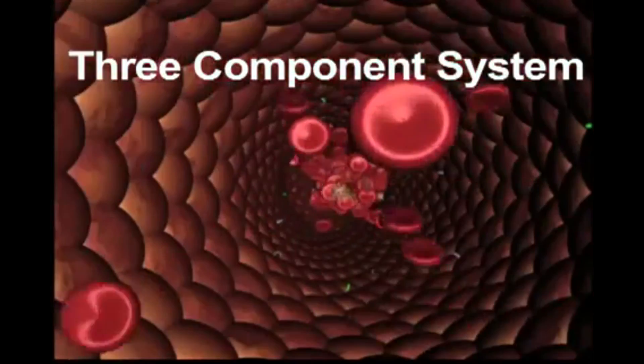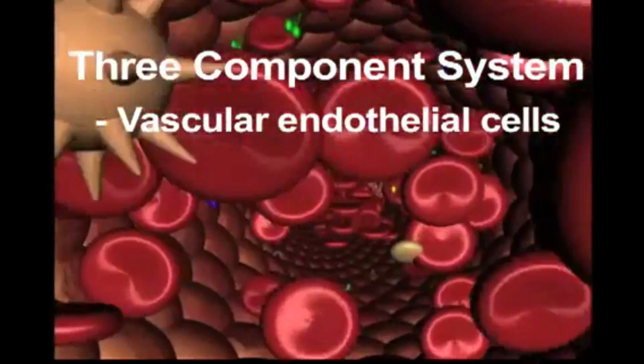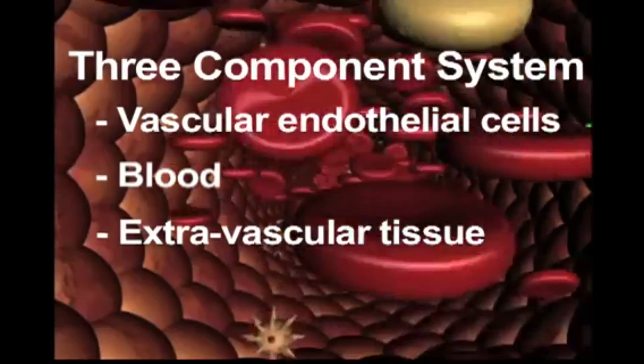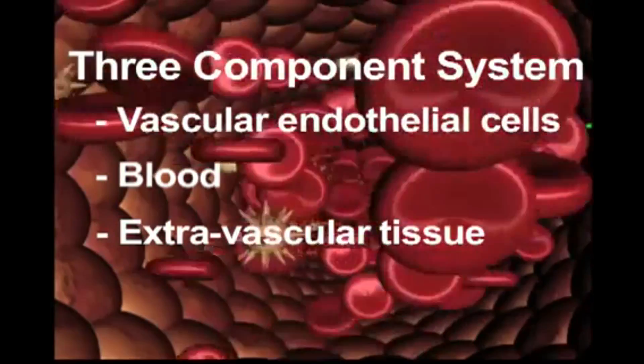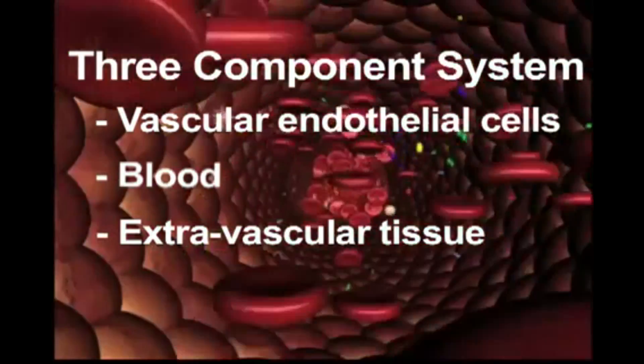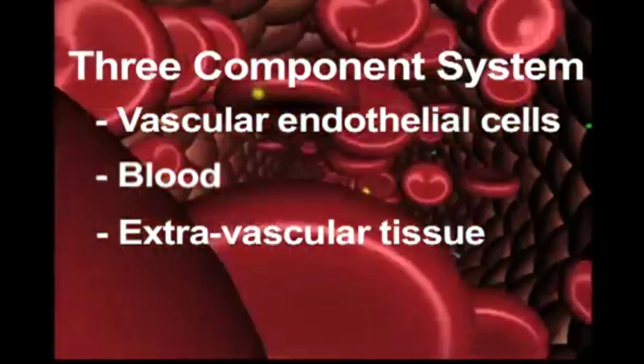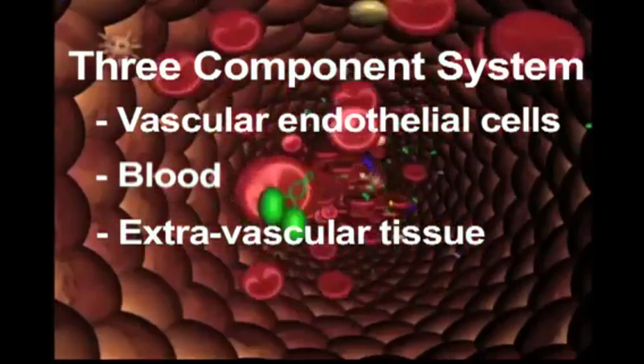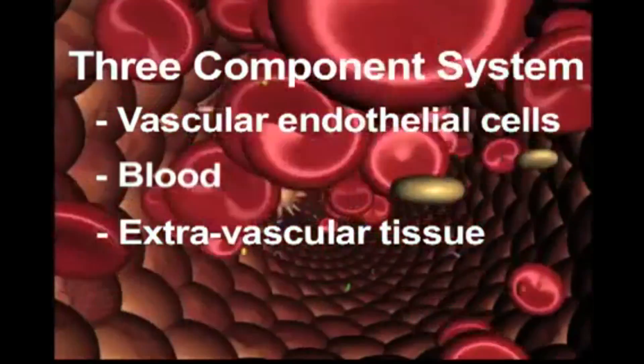The system involves the vascular endothelial cells which line the blood vessel, the blood, and extravascular tissue. These three compartments function to produce an integrated response to attenuate blood leakage by localized activation at the site of vascular injury with the dimensions of the response relevant to the injury.